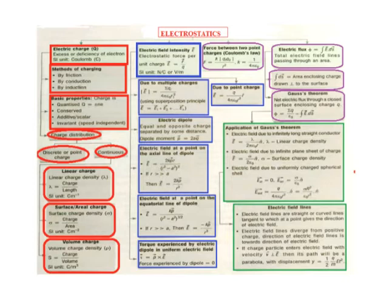Next is volume charge density, denoted by rho. Rho equals charge divided by volume. The SI unit is coulombs per meter cubed (C·m⁻³). These are the electric charge quantities.